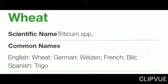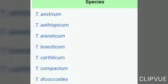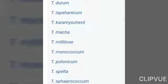Wheat has so many species which are grown worldwide. These include Triticum aestivum, the common wheat; Triticum aethiopicum; Triticum eroticum; Triticum boeoticum; Triticum carthlicum; and Triticum compactum.